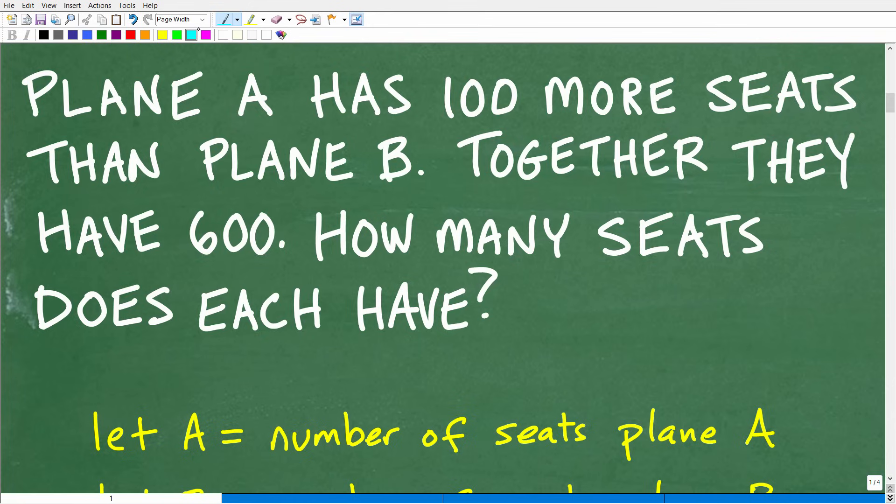Okay, so first things first. First we have a math word problem, so you always want to read a problem at least three times before you do anything. So here again we have Plane A and Plane B. Plane A has 100 more seats than Plane B. Now we don't even know how many seats Plane A has or how many seats Plane B has. We just have this relationship between these planes, and then of course we have some information that together they have 600 seats.